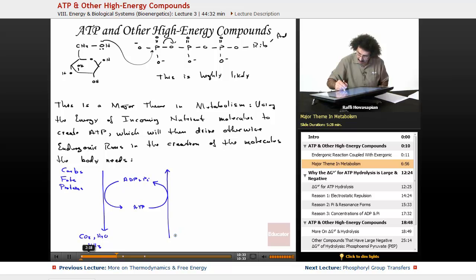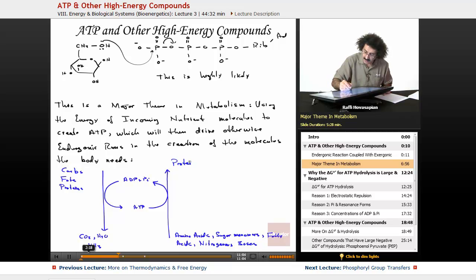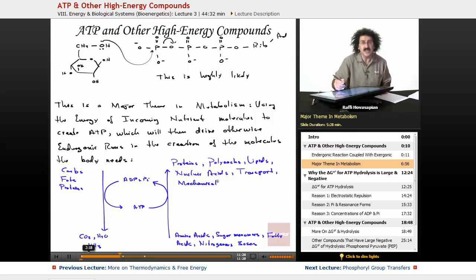Okay. Now, we have amino acids. We have the sugar monomers. Sugar monomers. Okay. We have our basic fatty acids. And we have nitrogenous bases. And we're going to form our proteins. Our polysaccharides. We're going to form our lipids. We're going to form our nucleic acids. And then, of course, there's transport. There is mechanical work, osmotic work, whatever it is that we need that energy for.